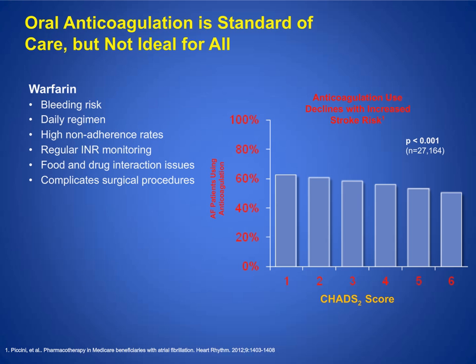Oral anticoagulation is the standard but it's not ideal for everyone. Patients on warfarin or Coumadin complain of having to take the medication every day, bleeding problems, easy bruising, labile INRs — meaning it's difficult to maintain therapeutic ranges — food interactions, and complications when planning elective surgery, requiring bridging. That period around surgery carries increased risk of bleeding or thromboembolic events.